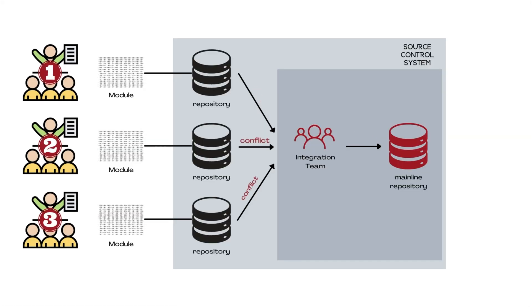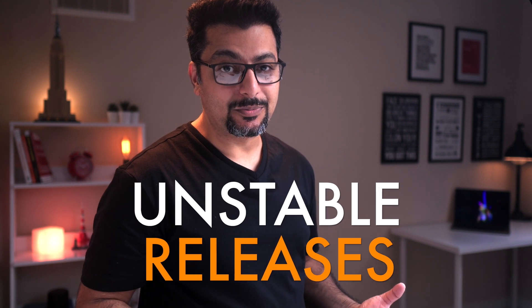Let's imagine all the merge conflicts are resolved and the development team fixed all the bugs. It's now time for the integration team to rebuild or recompile the code. Since this recompilation happens on an available personal computer owned by integration team members, the final compiled code often gets contaminated by automatic operating system updates and personal preferences, resulting in releases that are unstable and error prone when transferred to the production environment. For a release to be stable, the integration environment must be identical to the final production environment.